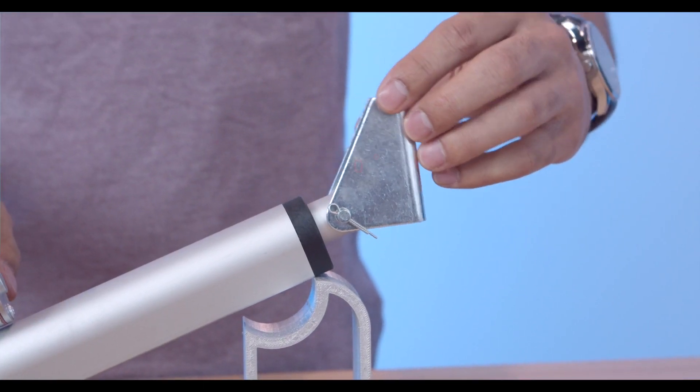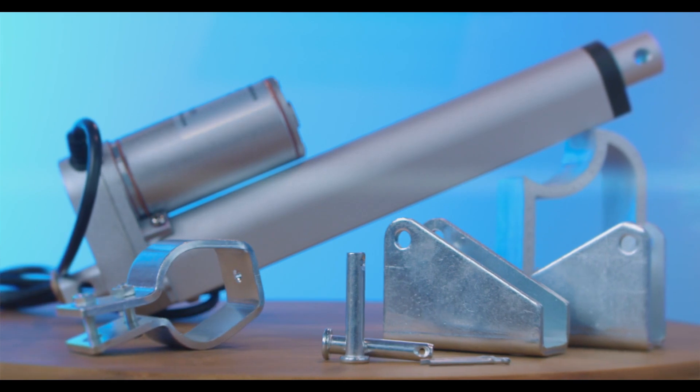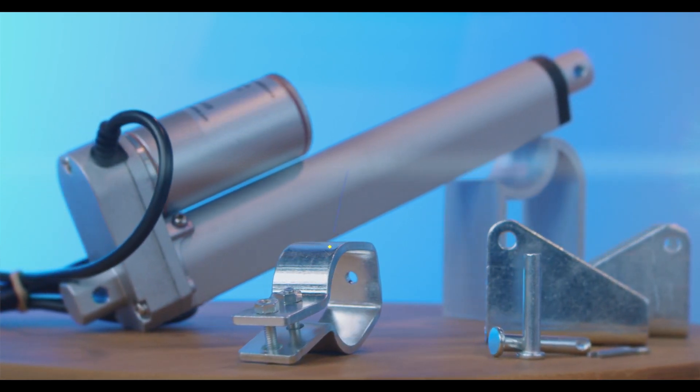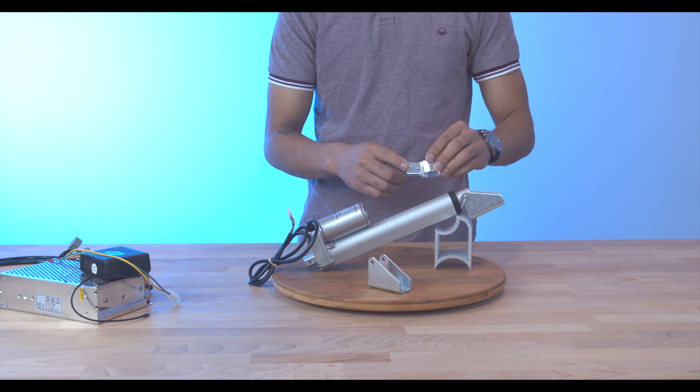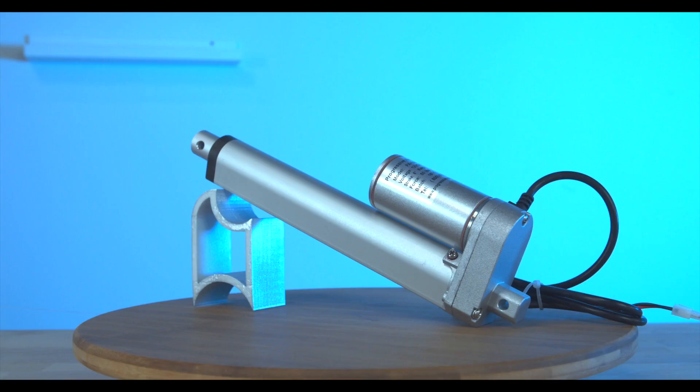This mounting bracket is lightweight and allows up to 180 degrees of rotation. We also carry the BRK03. This bracket fits over the housing of the PA14 and allows for an alternative mounting solution for your application.